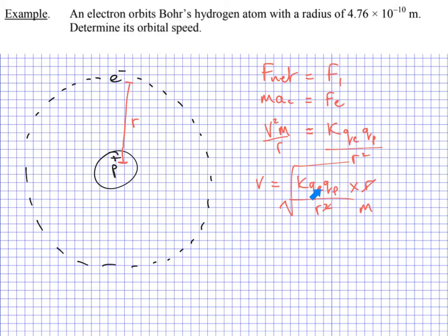The charge of the electron is the elementary charge, 1.6 times 10 to the negative 19 Coulombs. And the charge of the proton is also the elementary charge, 1.6 times 10 to the negative 19 Coulombs. Do we keep track of the positive and negative? No, because charge is a scalar value. Let's plug this into our calculator. Should be 7.29 times 10 to the 5 meters per second.